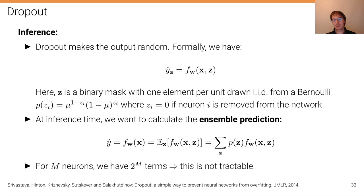At inference time we then want to calculate the ensemble prediction. Right, that's also what we did before for the ensembles before—it was a small number of k ensembles. Now in this case it's actually intractable because the number of ensembles is exponential in the number of neurons. For M neurons we have 2 to the power of M terms in this expression here, right, because this z—the sum over all possible z's creates this exponential growth in the terms of this expression here. So we simply can't calculate the ensemble prediction by averaging.